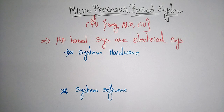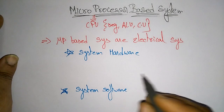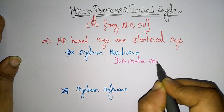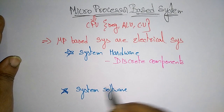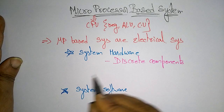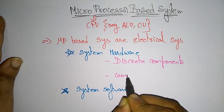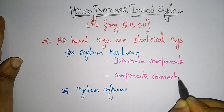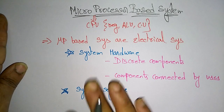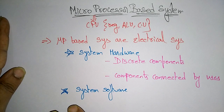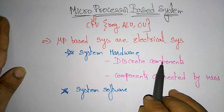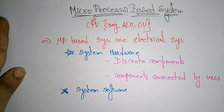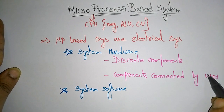Whenever both system hardware and software are present, only then will your system work. The system hardware consists of discrete components and components connected by buses.